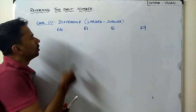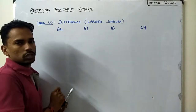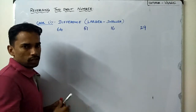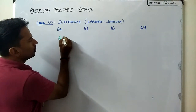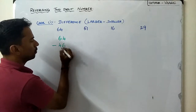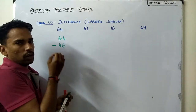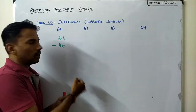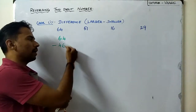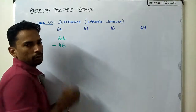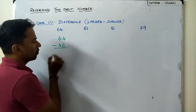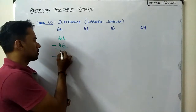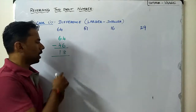The first number is 64. The reverse of 64 is 46. Since 64 is the bigger number and 46 is the lesser number, we do 64 minus 46. Finding this difference: 4 minus 6 requires borrowing, giving 8 in the ones place and 1 in the tens, so the answer is 18.